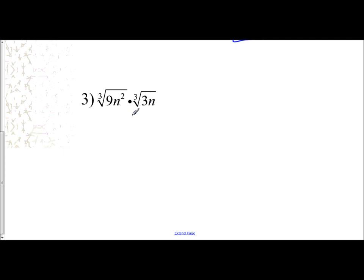So I can't simplify them when they're separate, so what I'm going to do is I'm going to multiply the insides together to form one cube root. So 9 times 3 is 27, n squared times n is n cubed. And so now take a look. What's the cube root of 27? Well, it's 3. What's the cube root of n cubed? It's n. And so now it is able to be simplified.